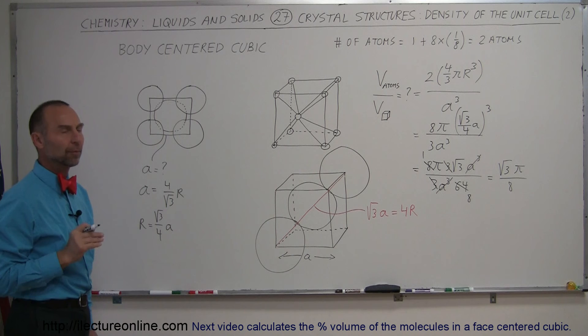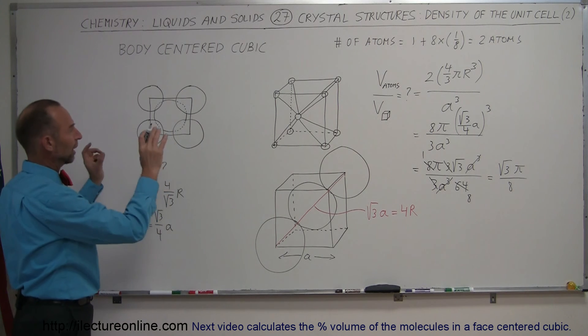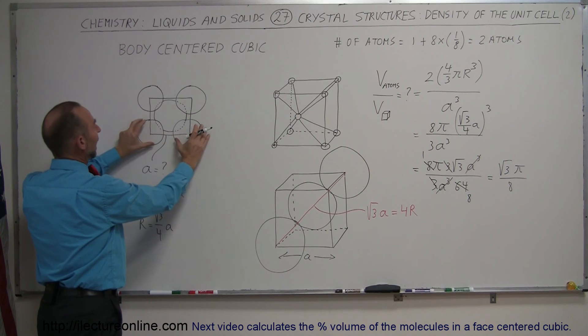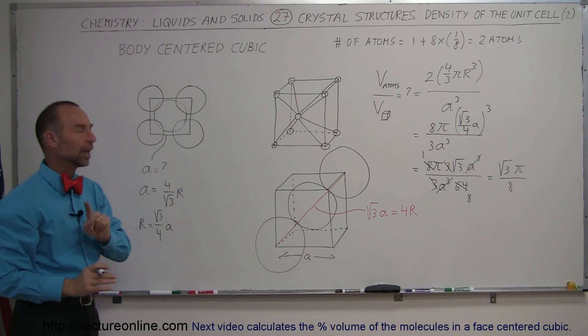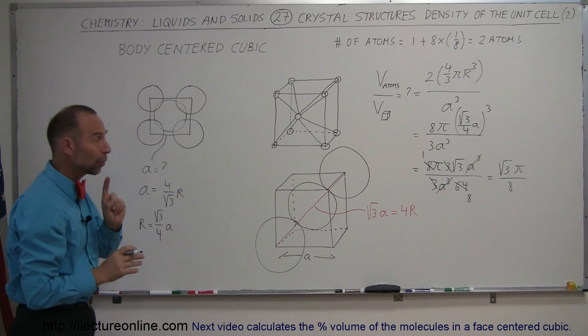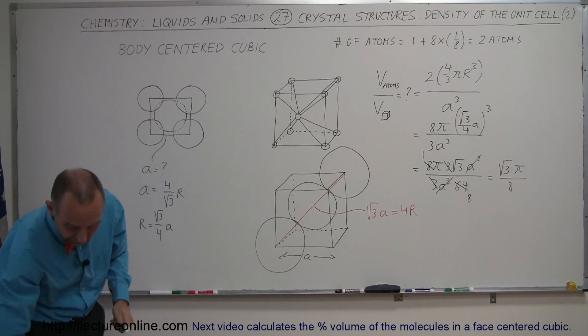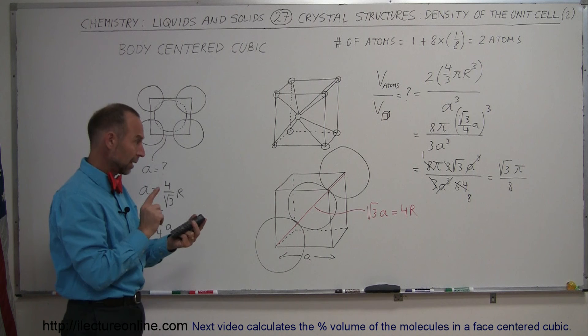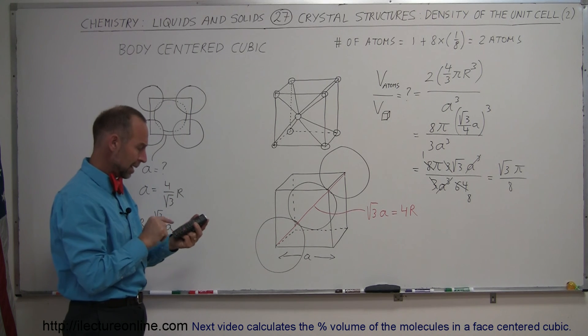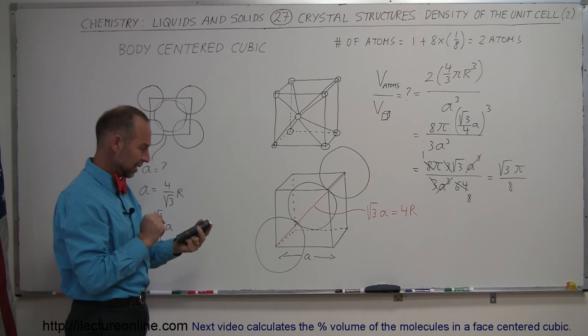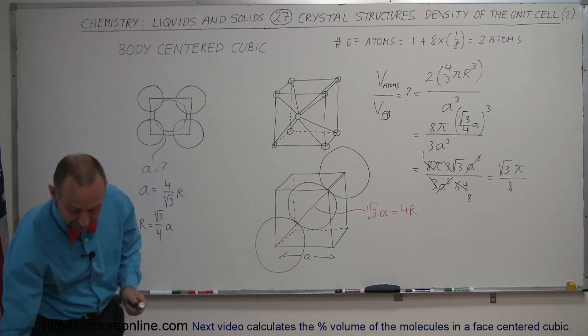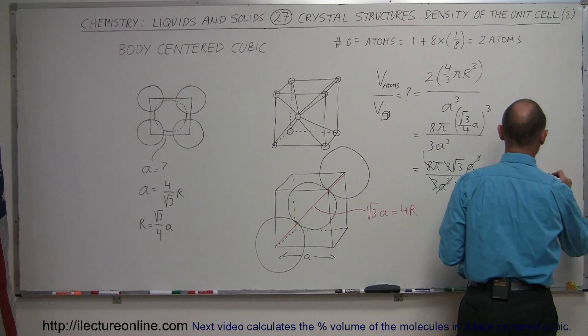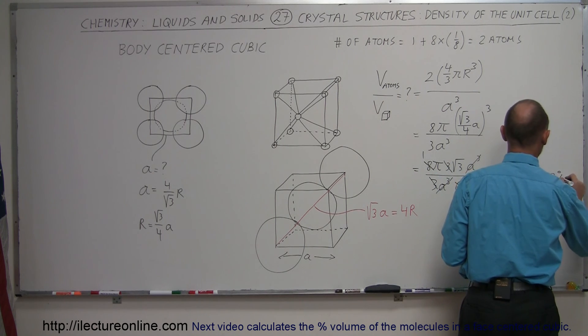And that should now be the new ratio of the packing of the atoms in what we call a body-centered cubic. Remember, when it was just atoms at the corner, the cube would be a little bit smaller because the corner atoms would be touching each other. In this case, they will not be touching each other, but we probably have a more dense packing. Let's find out what that number is equal to. So we take the square root of three, multiply times pi, and divide by eight. And there you go. Sixty-eight percent.